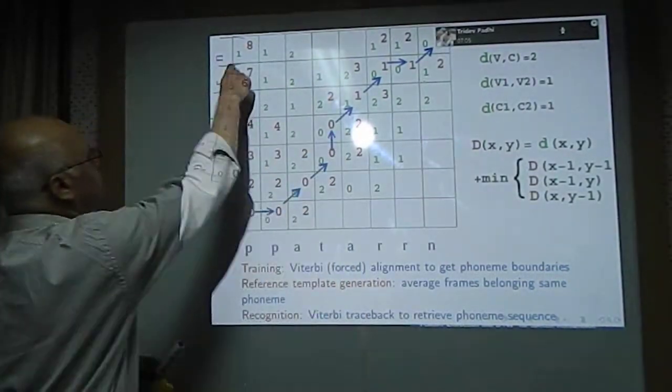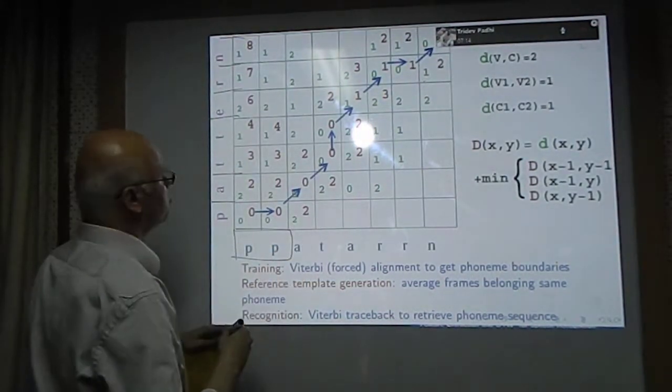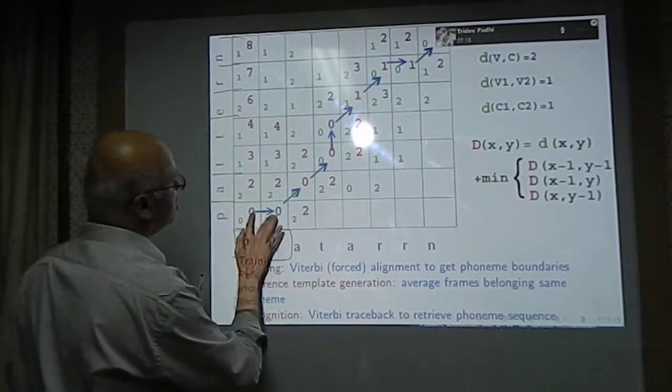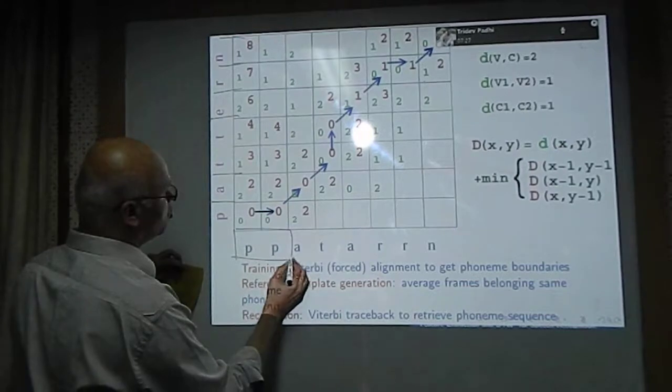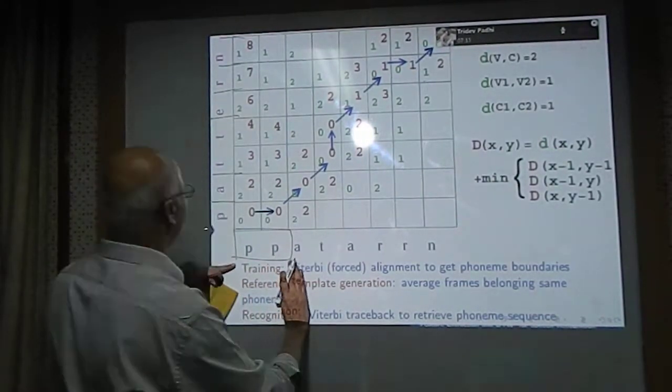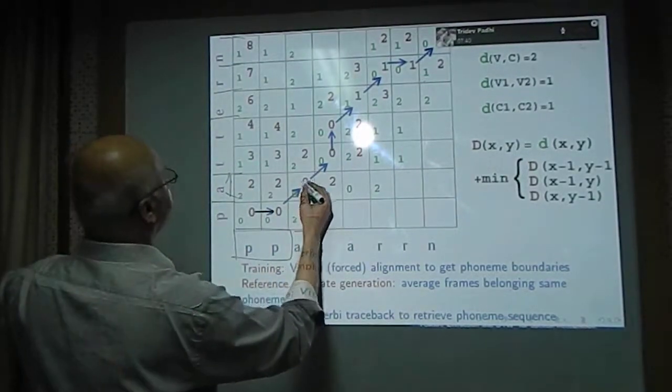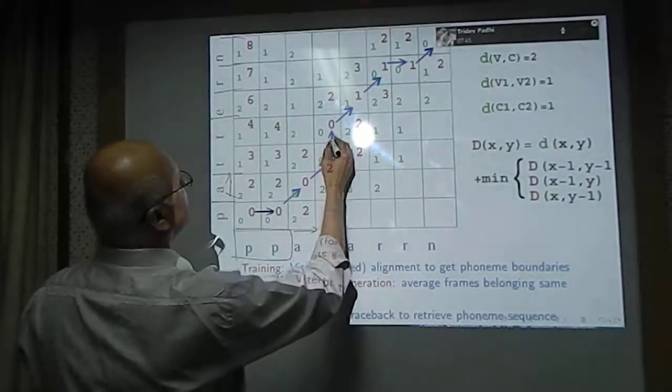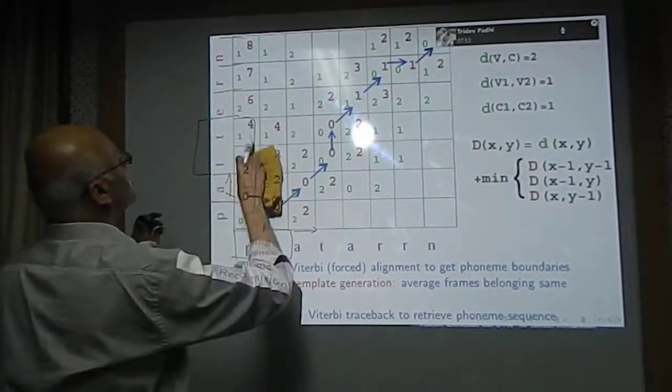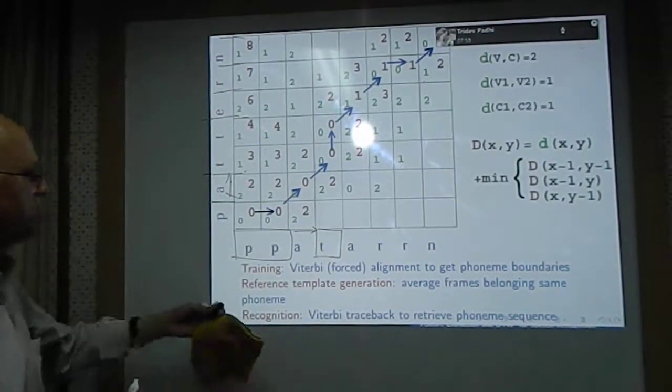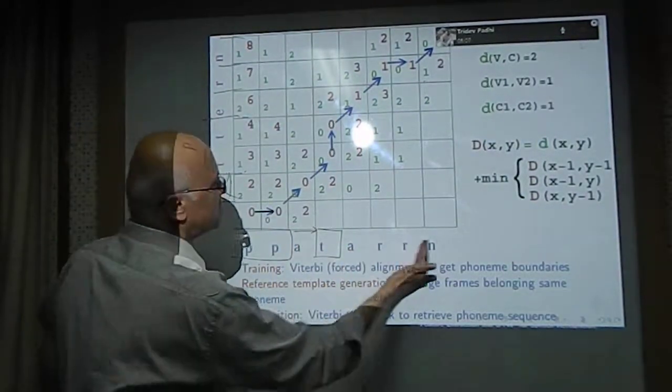This is a test spoken pattern where the P was spoken for too long a time, and that is why the path is horizontal. By looking at this path, we know that two frames of the P phoneme match with one frame of the P phoneme in the reference. A here matches with A there because the path is diagonal. Whenever the path is vertical, it says that in the reference template, T was spoken for a little longer time than in the test.